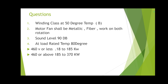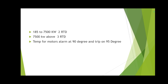For motors rated 460 volts or less, the range is 0.18 to 185 kW. For 185 to 370 kW we use the next voltage tier. For motors from 185 to 7500 kW, two RTDs and two space heaters should be running; for motors above 7500 kW, three RTDs are required.